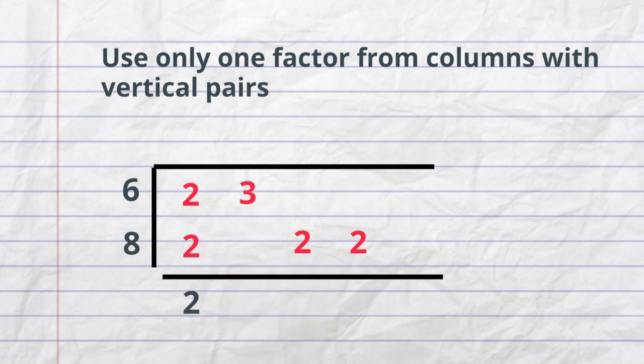Next, for 3, I do not have a vertical pair, the other 2, no vertical pair, or the next 2, no vertical pair. So my greatest common factor of 6 and 8 is 2.